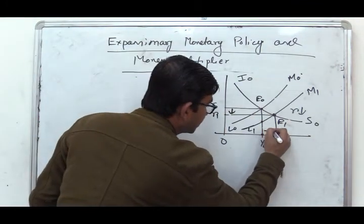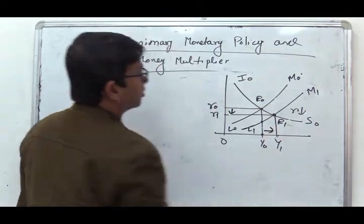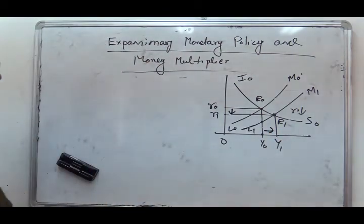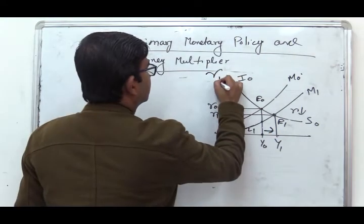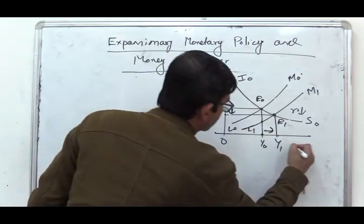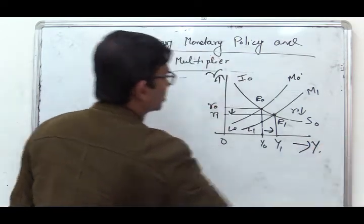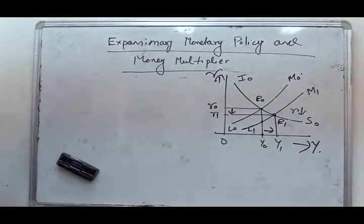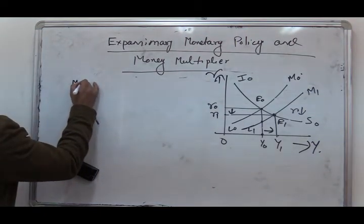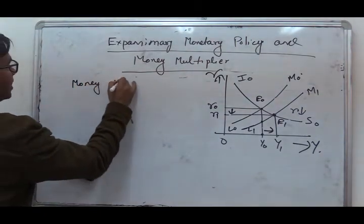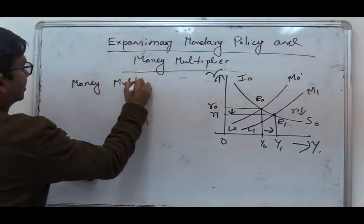So, the rate of interest declines and the output level will increase. On the vertical axis we are measuring the rate of interest, and on the horizontal axis we are measuring Y. Now we will consider the case of the formal math model.